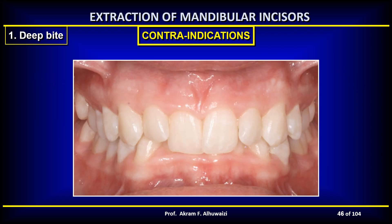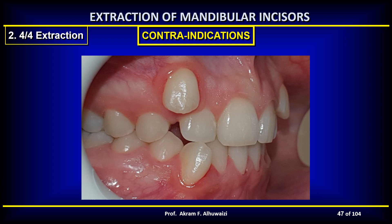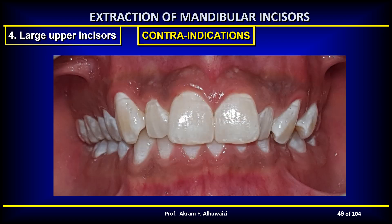The contraindications of extraction for lower incisors include deep bite cases with horizontal growth pattern, all cases which require upper first premolar extraction while canines are in class 1 relationship — because if you extract in the lower anterior you bring the canine forward, and extracting the upper four brings the canine backward, ending up with a class 3 canine relationship. This is especially true if there is no tooth size discrepancy in the incisor area. Cases with large upper incisors or small lower incisors are also not indicated for mandibular incisor extraction.